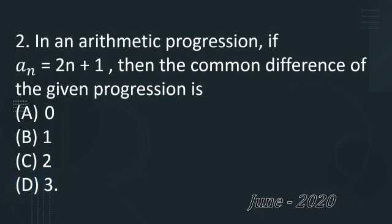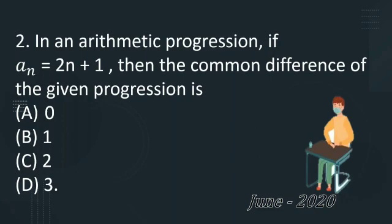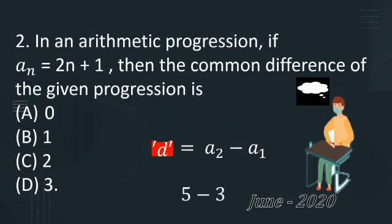This question is taken from June 2020 question paper. Here also you can do only mental work, no paperwork. D is a_2 minus a_1. You have to put 2 in the place of n here, then 1 in the place of n to get a_2 and a_1 respectively. So a_2 is 5, a_1 is 3. So the correct option is C.